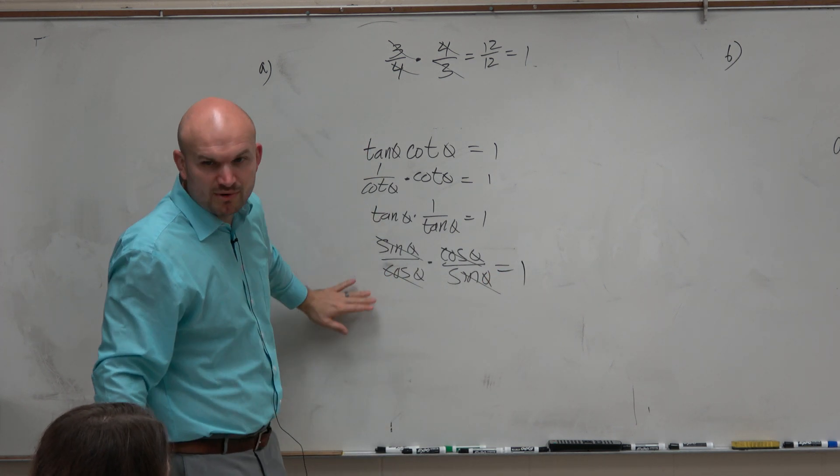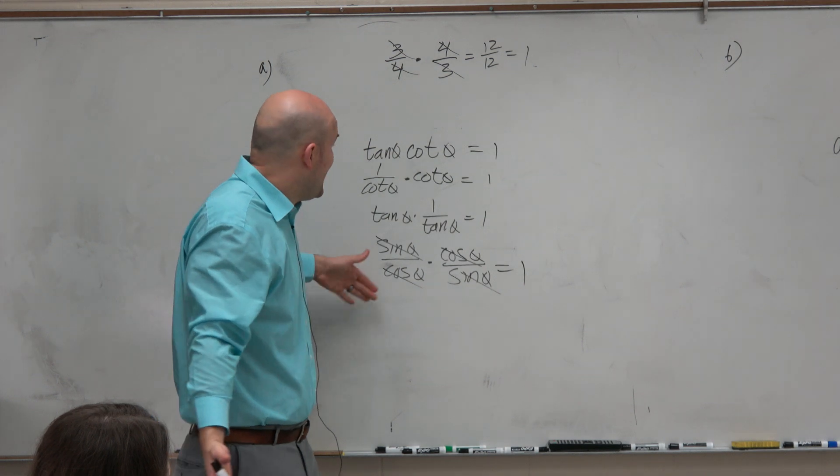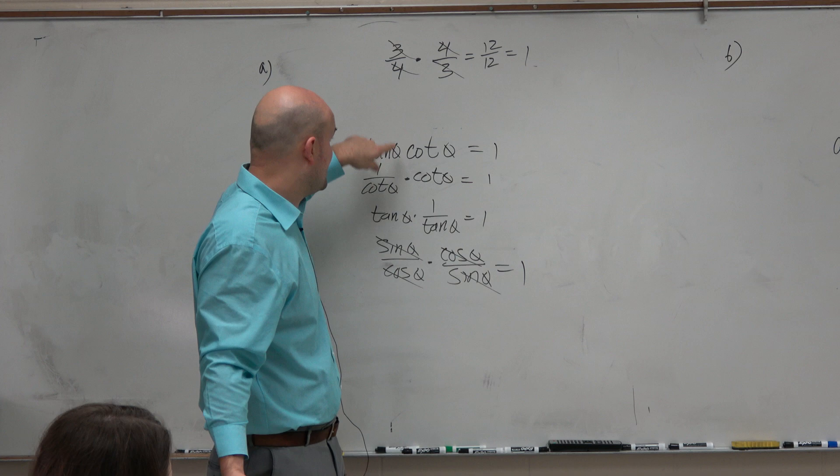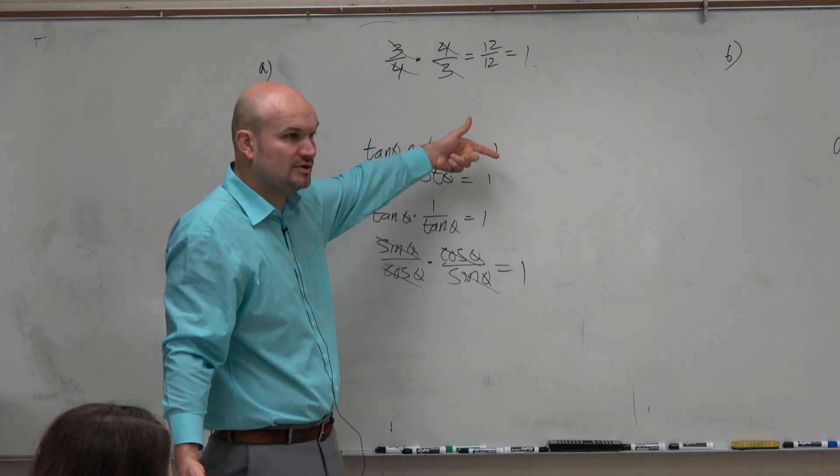So I just showed multiple representations, because it doesn't matter. Any one of these would be correct or fine to use. But that's the understanding that tangent and cotangent are reciprocals of one another.